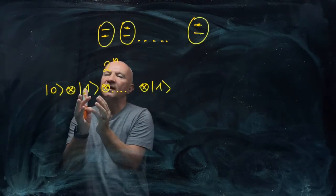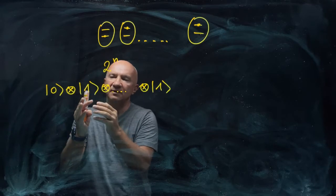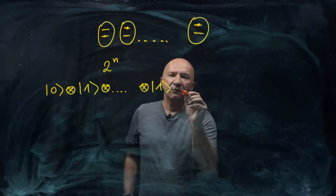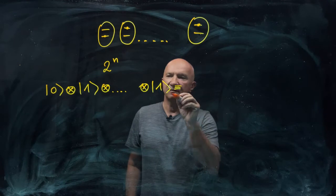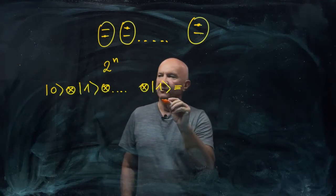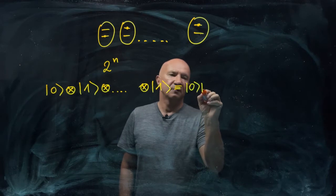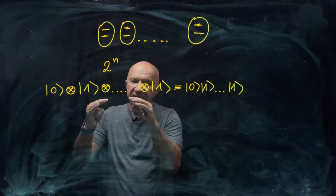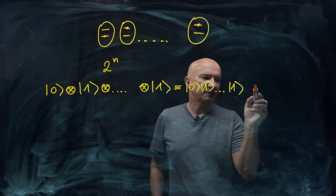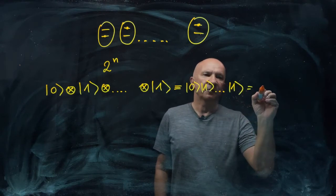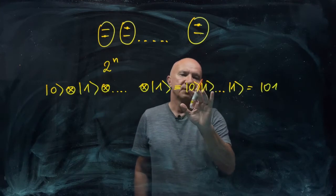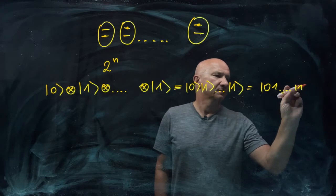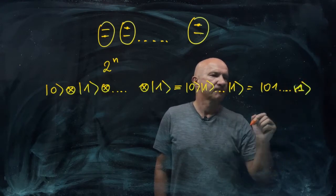So I have one qubit and tensor another qubit. For tensor, you may think, okay, add another qubit and add another qubit. Quite often, we simplify this notation and just drop the tensor product symbols and write it as 0, 1, all the way to 1. And when it comes to the basis states, we even simplify it further and we write it as 0, 1. So we drop all those brackets in between.